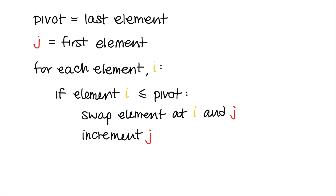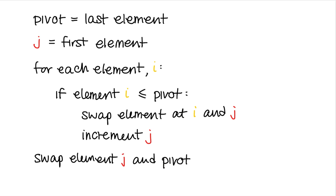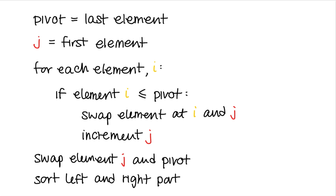After the loop is over, we move the pivot to the position between the two partitions by swapping the element at high with element j. We swap with j because by the end of the loop, j is pointing to the element that is larger than or equal to the pivot. Then lastly, we sort each partition using quicksort on the left partition and the right partition.